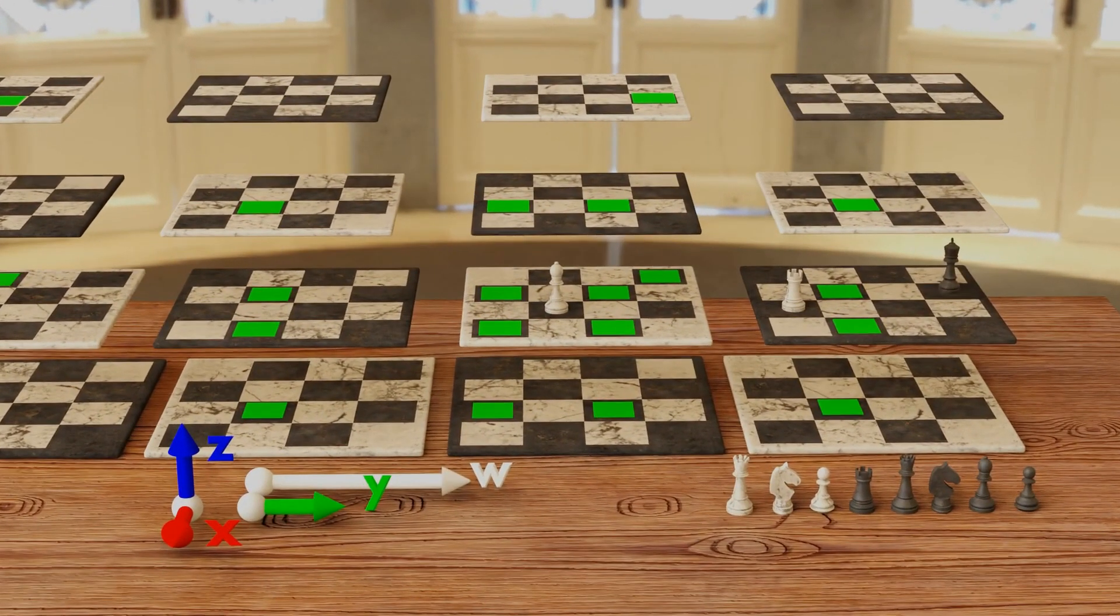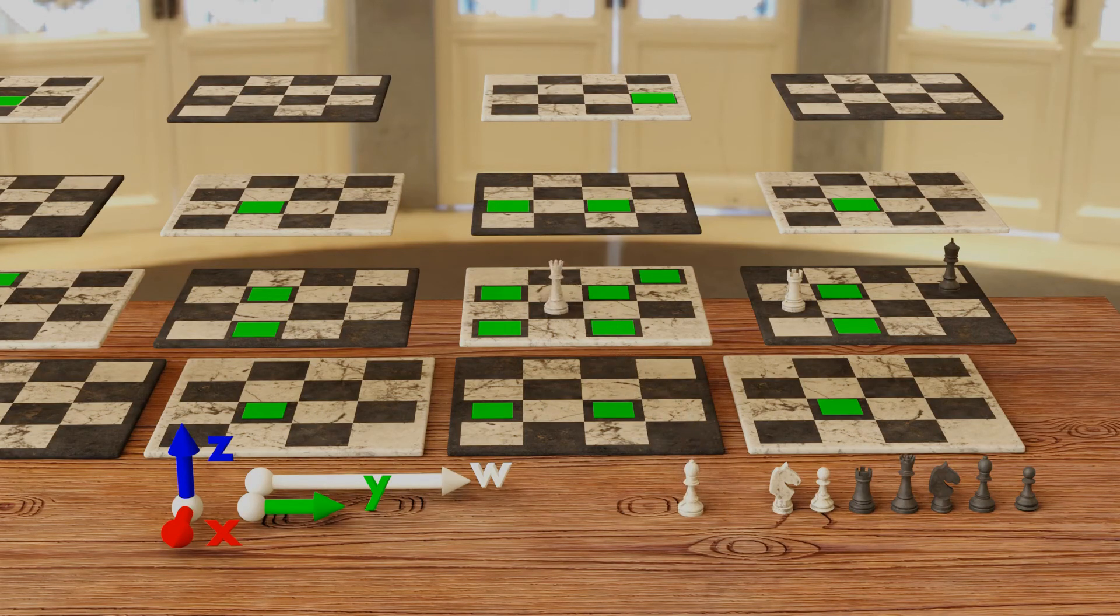Zooming in to see the pieces a little bit better, let's go ahead and examine the queen's motion. The queen is going to move identically to the bishop with the addition of the rook's moveset.